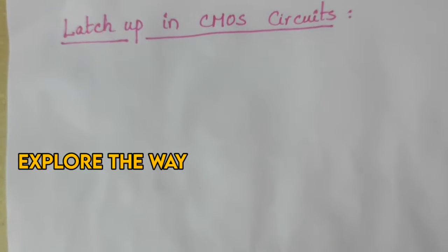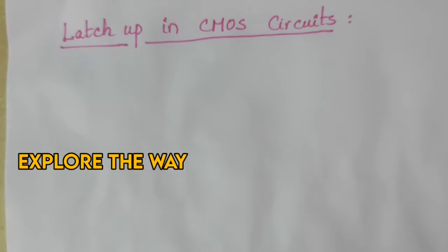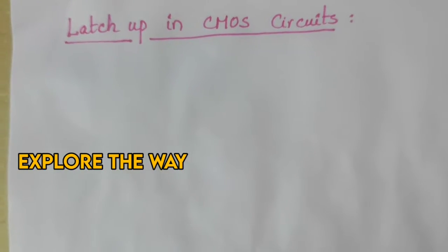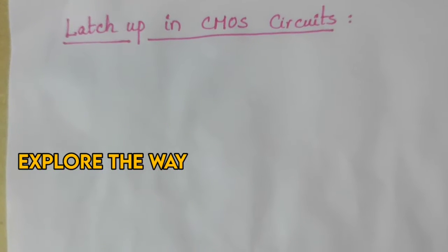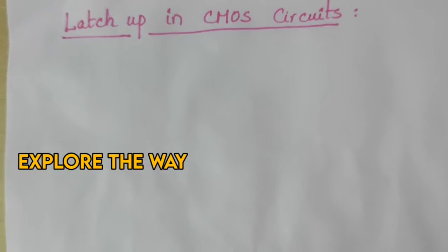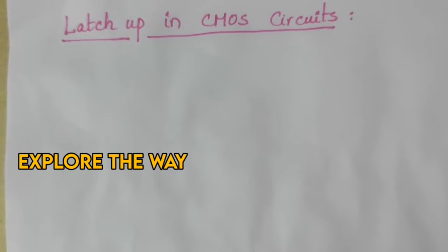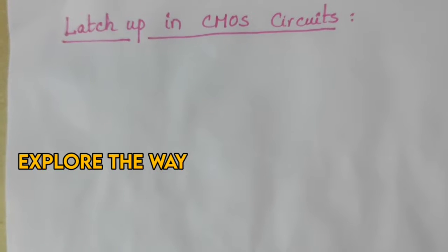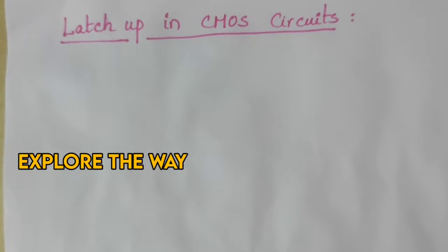In this video, I am going to explain an important failure in CMOS circuits — latch-up. Latch-up is a condition in CMOS circuits where a low resistance conducting path is established between VDD and ground. Due to that low resistance conducting path, a heavy amount of current flows from VDD to ground that damages the CMOS device.